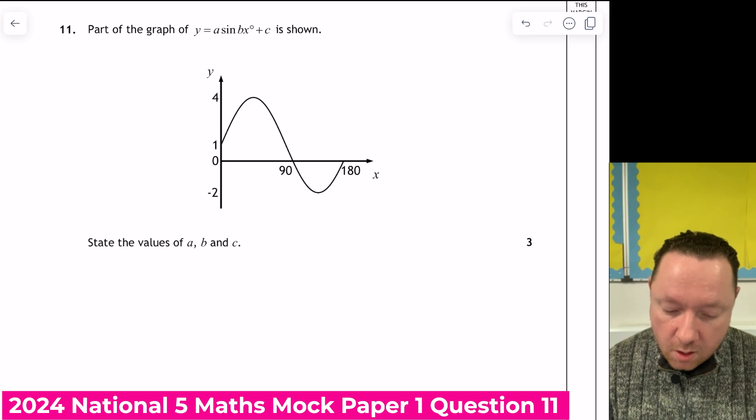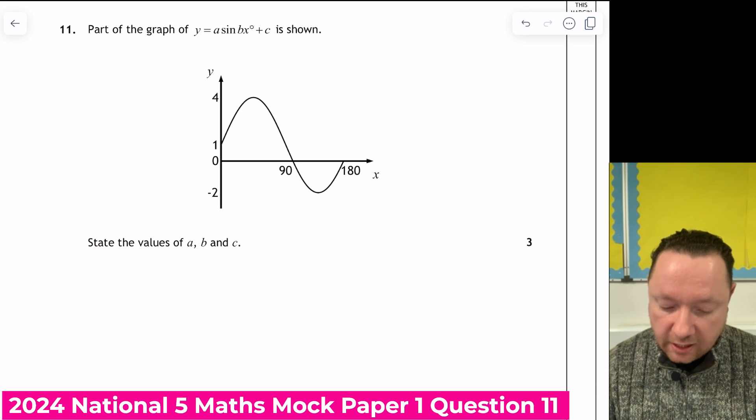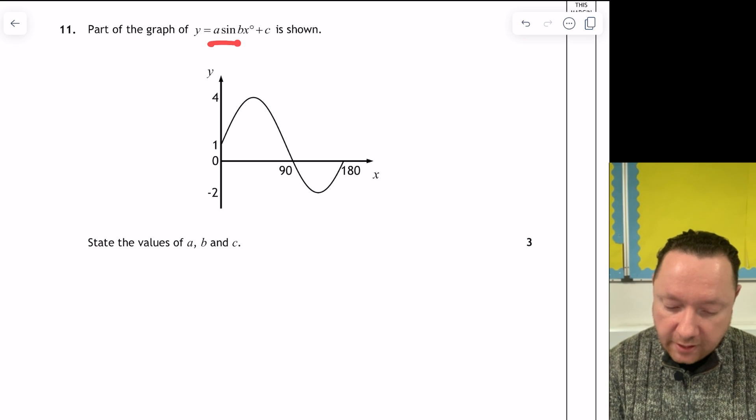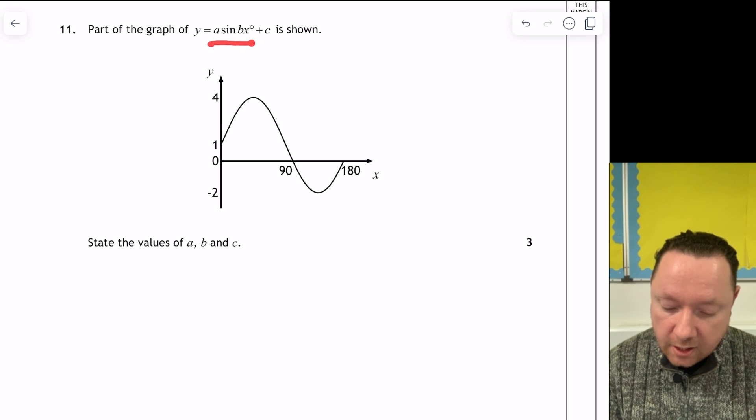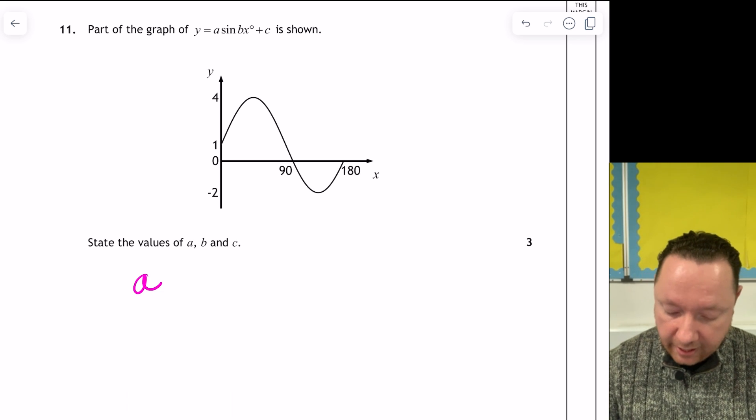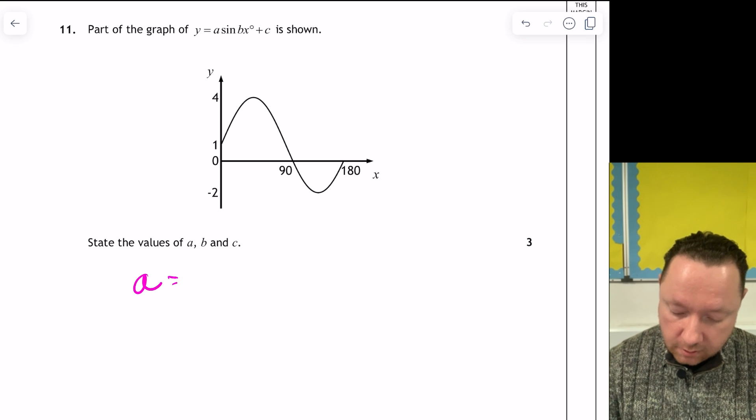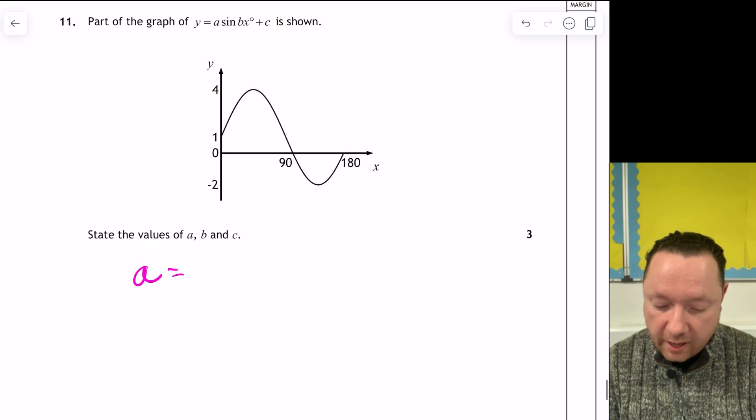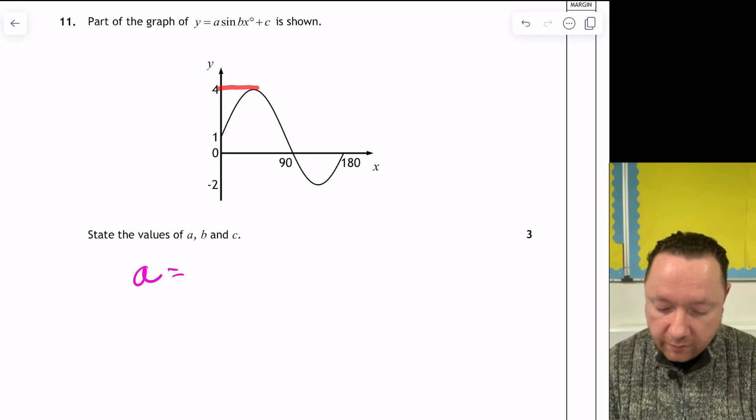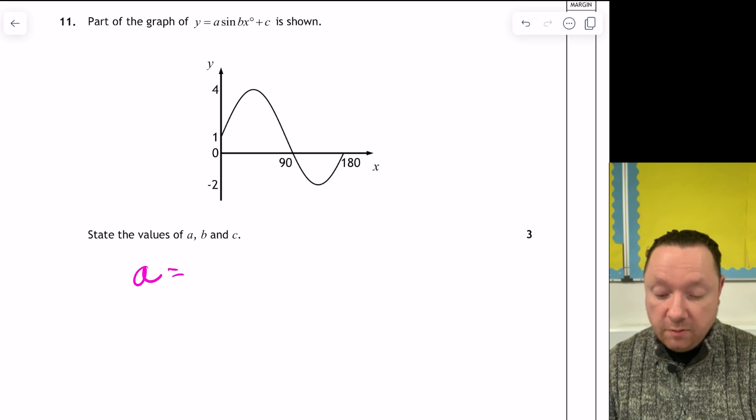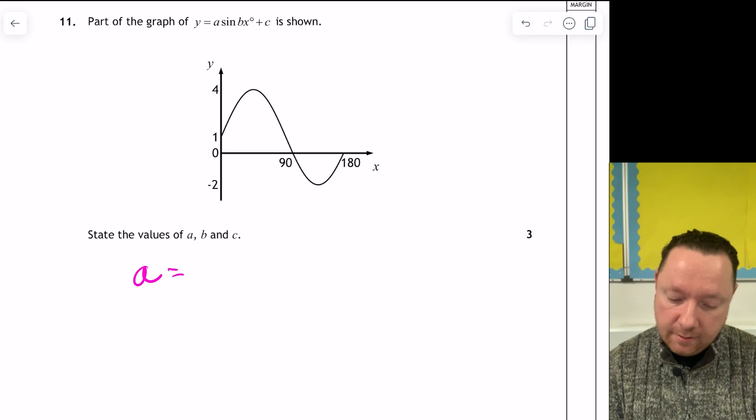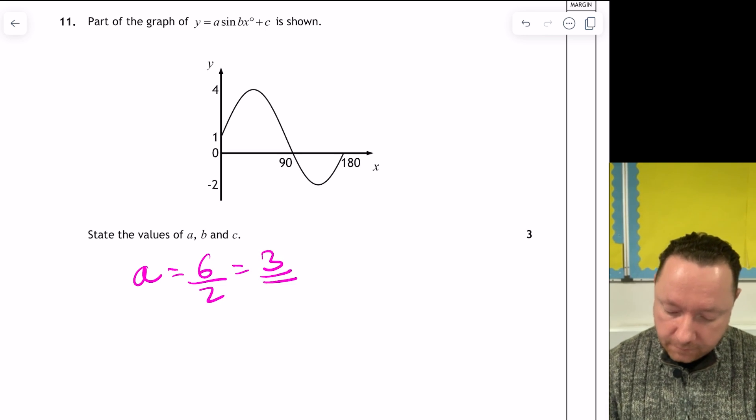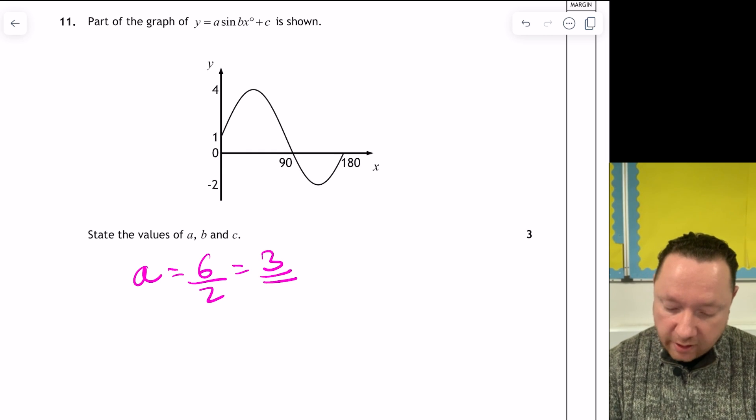Question 11. Part of the graph of y equals a sine bx plus c is shown. State the values of a, b, and c. So a little bit trickier of this one than normal. We've got 3 things to find instead of 2. So the first thing we're going to look at is a. Be very careful here, it's not 4. Because there's a plus c in the way. So how you do that is you look for the highest point, 4. And then the lowest point is minus 2. The difference between 4 and minus 2 is 6. And then I half that. So I get 3. So 3 is a.